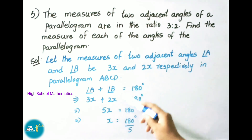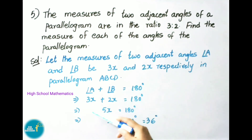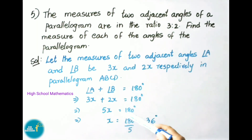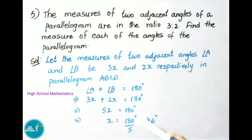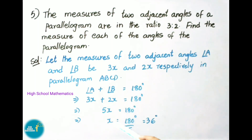Substituting: 3x plus 2x equals 180 degrees, so 5x equals 180 degrees. Therefore x equals 180 divided by 5. Transposing the 5 to divide, and cancelling, we get x equals 36 degrees.